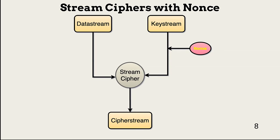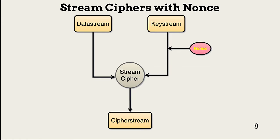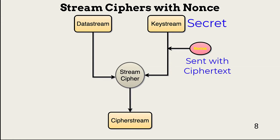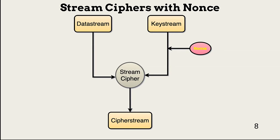One way to strengthen the security of a stream cipher is to add a nonce to the key stream. The nonce is a truly random value, and in many cases contains a granular timestamp to ensure uniqueness. The key is secret but shared between the sender and receiver. The nonce is not secret and is sent with the message stream. Both the key and the nonce are needed for decryption, which allows reuse of the same key because of the uniqueness of the nonce.